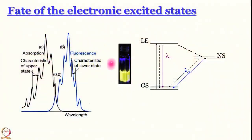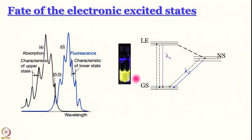It can come down by giving out the excess energy in the form of light, like what we see here. This is a sample prepared in our lab which is brightly photoluminescent. We are going to discuss the relationship of the fluorescent spectrum with the absorption spectrum. We have already learned that the absorption spectrum is expected to have a structured vibronic kind of feature because of participation of higher vibrational levels.